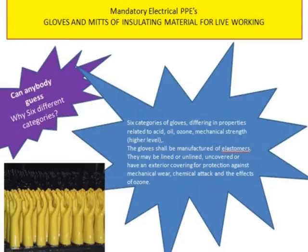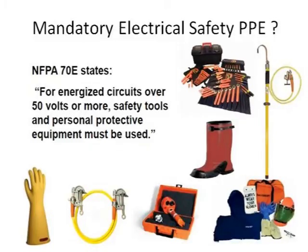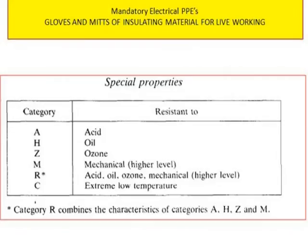When should you use these PPEs? NFPA 70E states that for energized circuits of 50 volts or more, electrical tools and personal protective equipment must be used in combination. This applies to class 0, 1, 2, and 3.